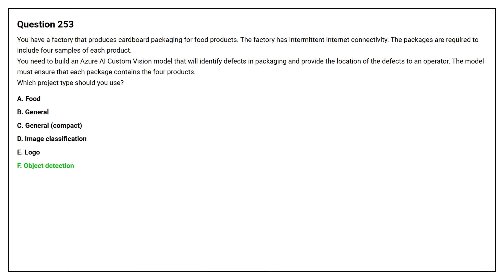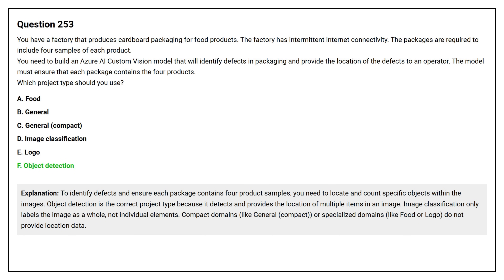The correct answer is Option F, object detection. To identify defects and ensure each package contains four product samples, you need to locate and count specific objects within the images. Object detection detects and provides the location of multiple items in an image. Image classification only labels the image as a whole, not individual elements. Compact domains or specialized domains like food or logo do not provide location data.